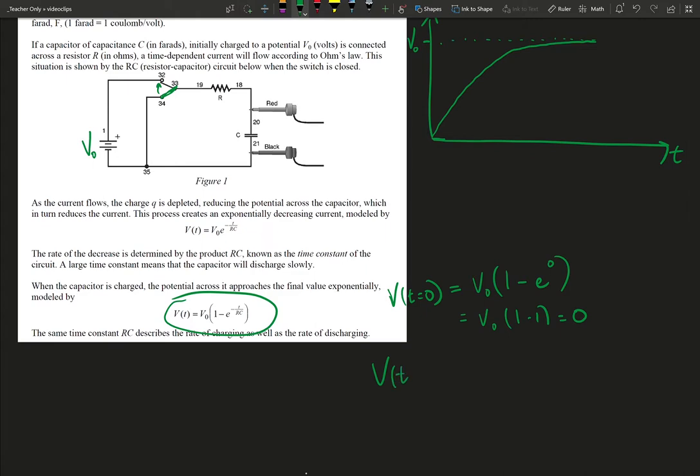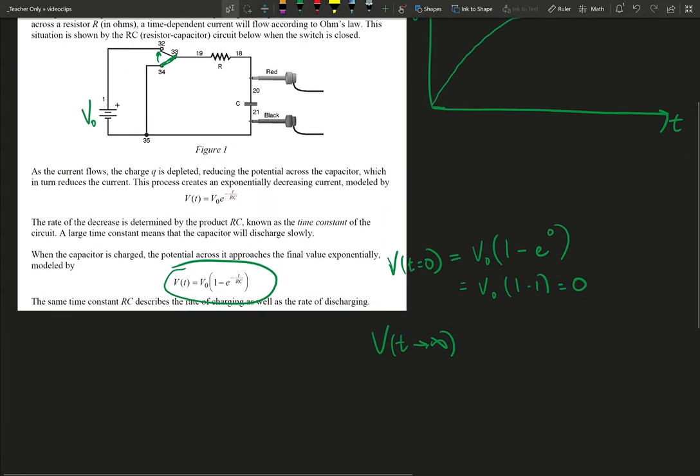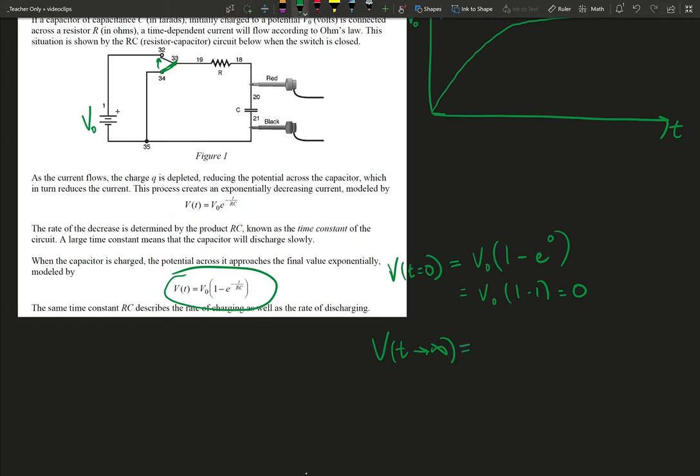Well, V at, I'll say, t goes to infinity because it won't actually equal infinity. We're never going to wait that long. But V0 times 1 minus E to the minus, well, let's just put infinity in here over RC.